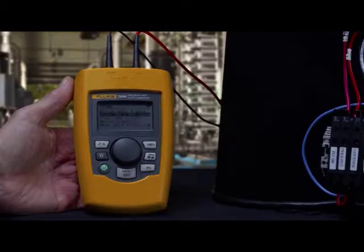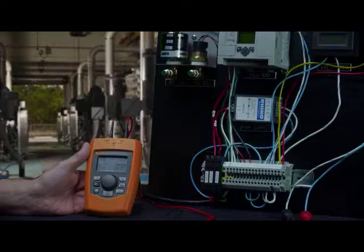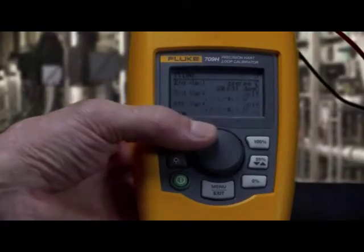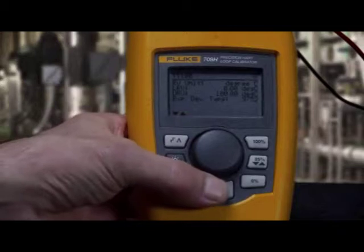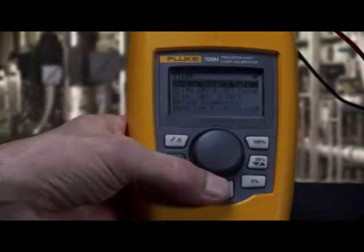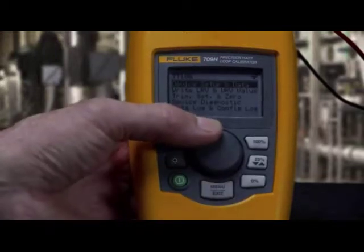Once in the HART menu, you can view a device configuration. In this screen you can see the device's HART tag, PV or process variable information, and ranging. This tag has a range of 0 to 100 degrees Celsius.